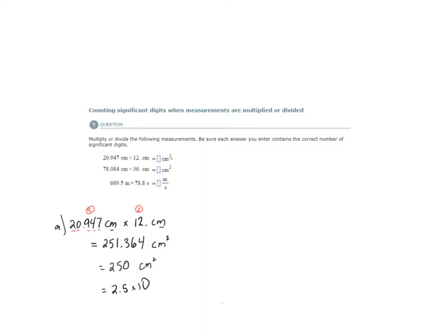How many times must the decimal place be moved to the right? One, two, so 10 to the 2 centimeters squared.